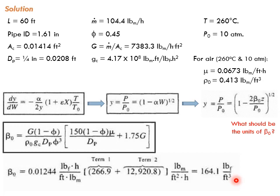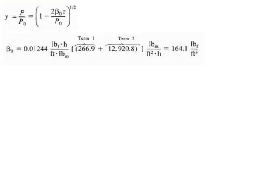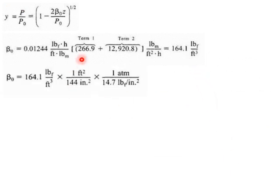You can calculate again β₀ and you find it as pound-force per cubic feet, but you want it as pressure per length. So instead of pound-force per cubic feet you can write it as pound-force per inch squared per foot, and pound-force per inch squared is psi, right? So here we go, you can use some unit conversion to convert the pound-force per cubic feet to pound-force per inch squared per foot.